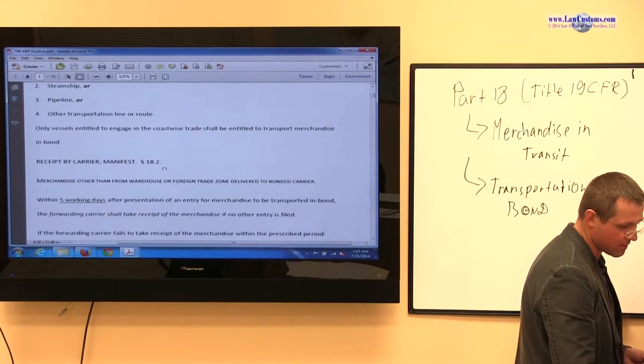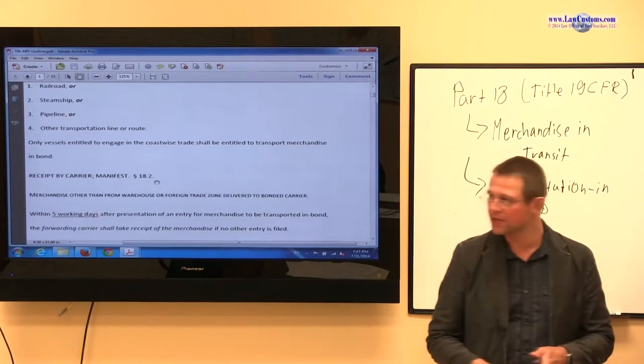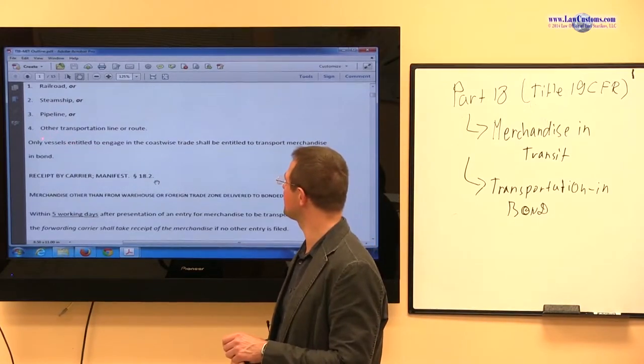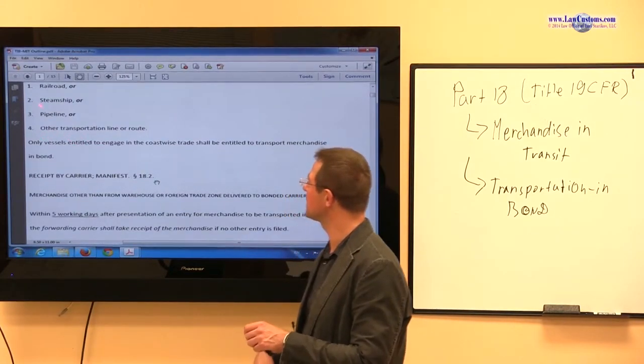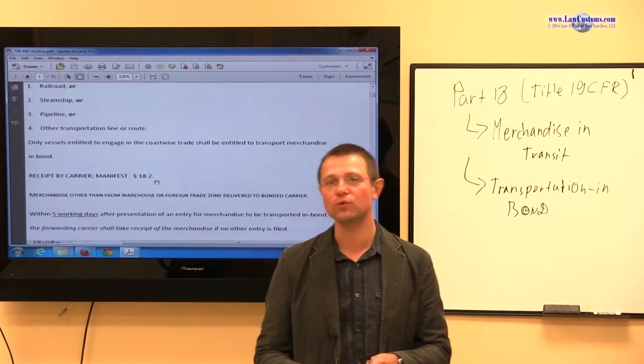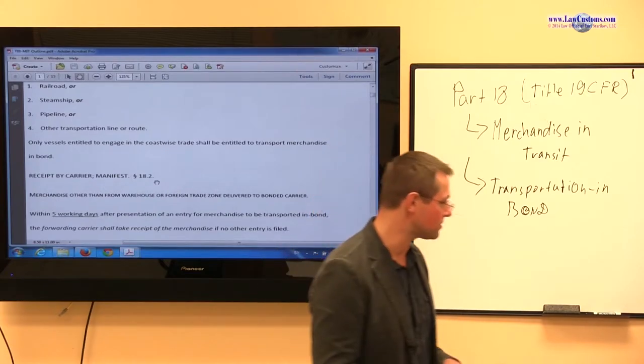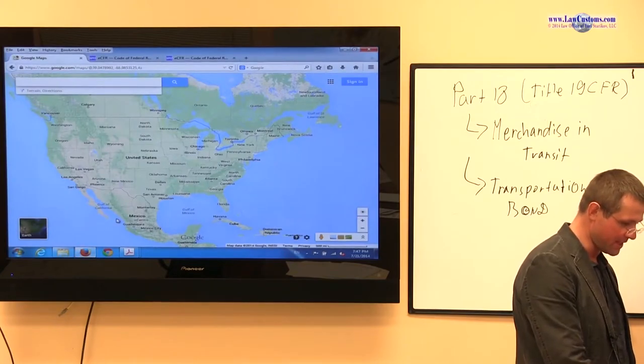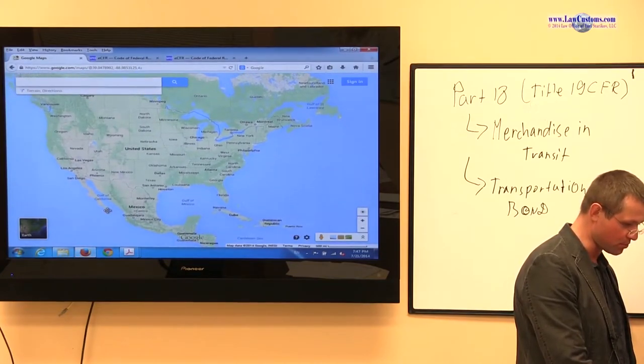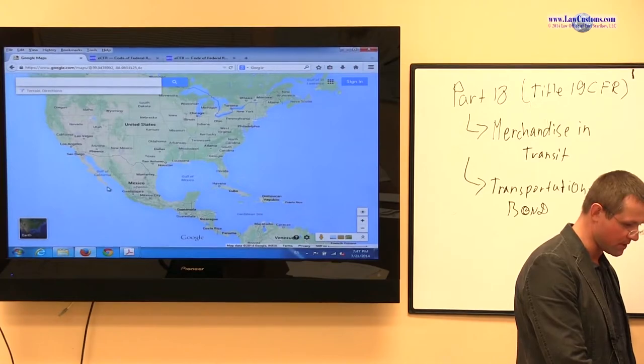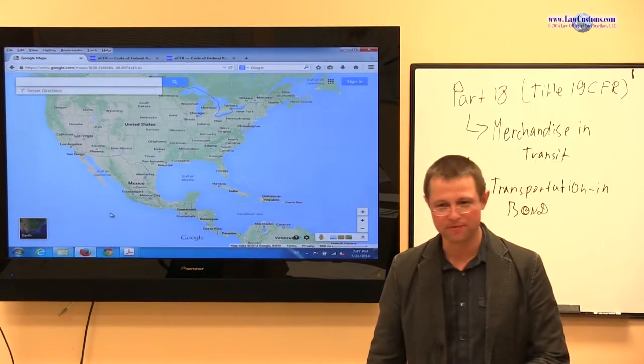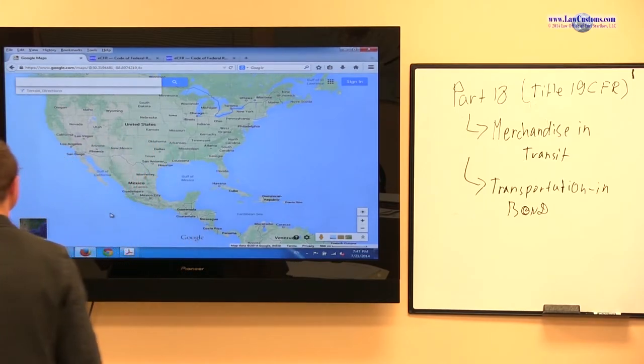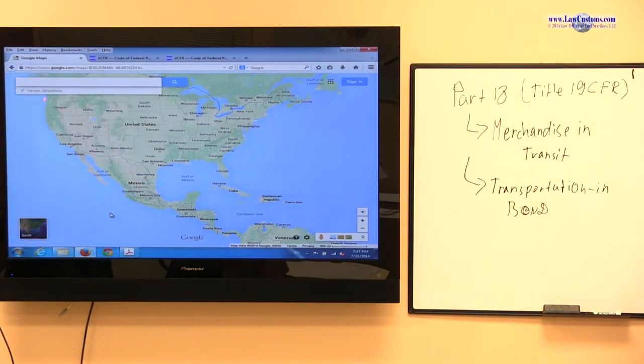Rules may vary if it is for vessel or for truck and railroad, because sometimes a vessel may need to take a different route to arrive at the place of final destination. Let's say the shipment arrives to Portland, Oregon.